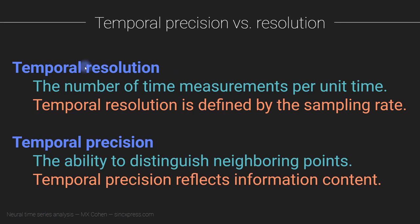Temporal resolution, you already know, it is the number of measurement points per unit time, so per second typically. So that's really just the sampling rate. The temporal resolution is the sampling rate.